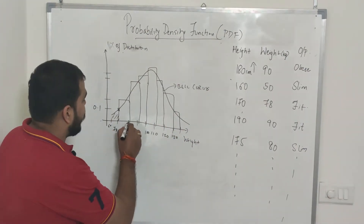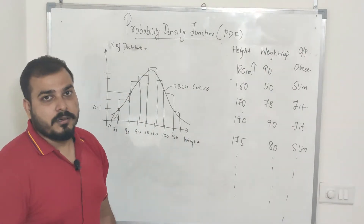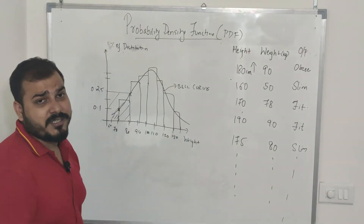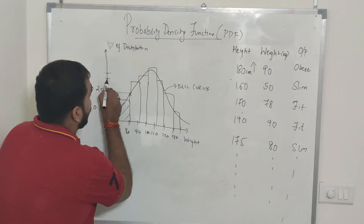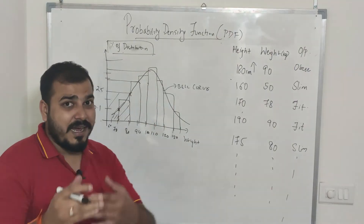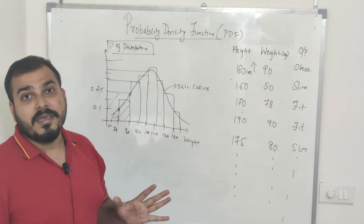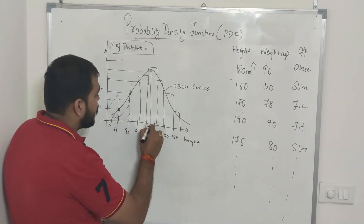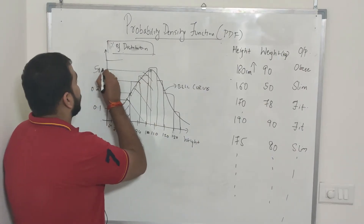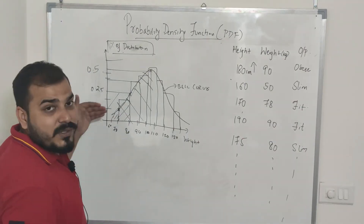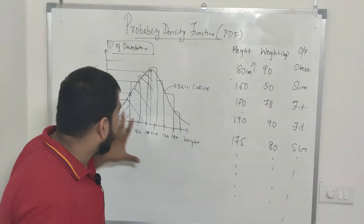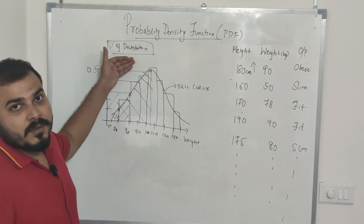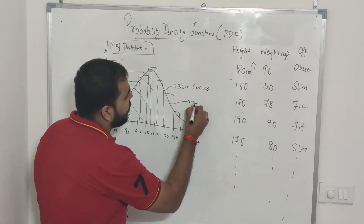For another point, suppose I want to find the total percentage of the distribution present there. I combine that region and find 0.25. When I consider the peak of the distribution, the value might be around 0.5, meaning 50 percent. When we combine all these values across all points, it adds up to 100 percent — meaning the total area under the curve equals 1. This is what a PDF — probability density function — represents.